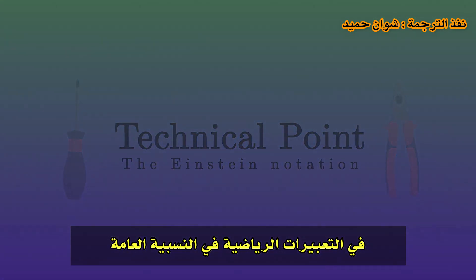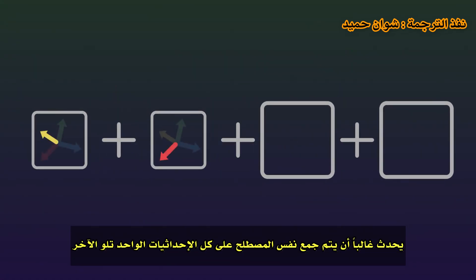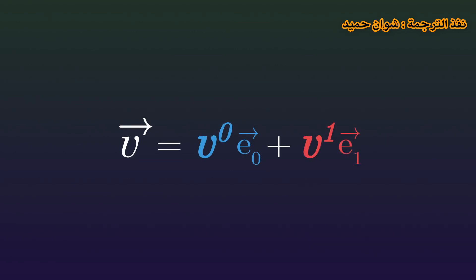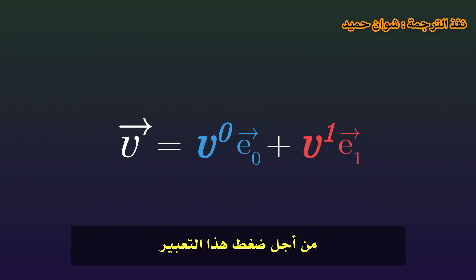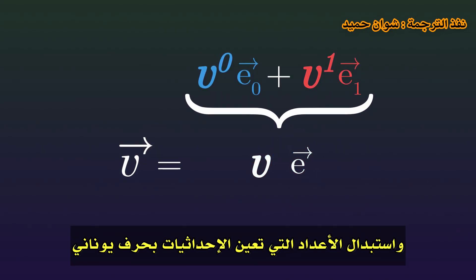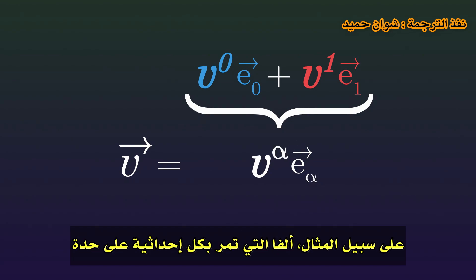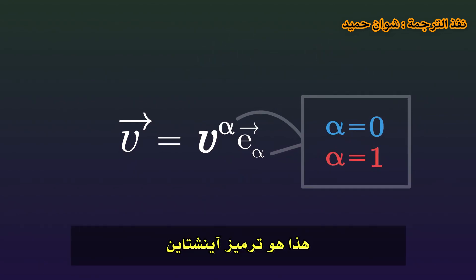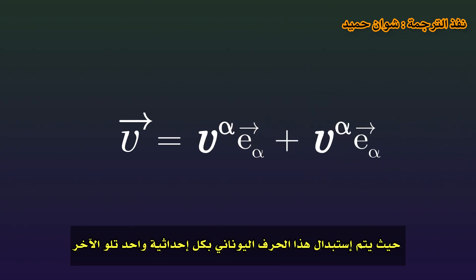In mathematical expressions in general relativity, it often happens that the same term is summed over all coordinates one by one. For example, in the previous equation, we wrote the vector as the sum of each component multiplied by each basis vector. To compactify this expression, we summarise the whole sum by writing only one term and replacing the numbers which designate the coordinates by a Greek letter — for example, alpha — which goes through each coordinate one by one. This is the Einstein notation: when a Greek letter is repeated twice, once up and once down, it stands for a sum in which that letter is replaced by each coordinate one by one.